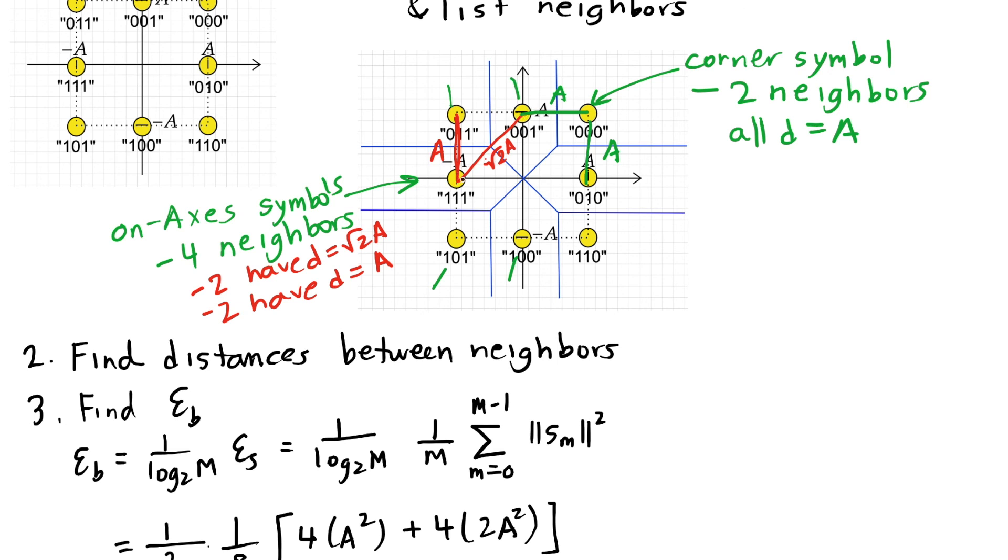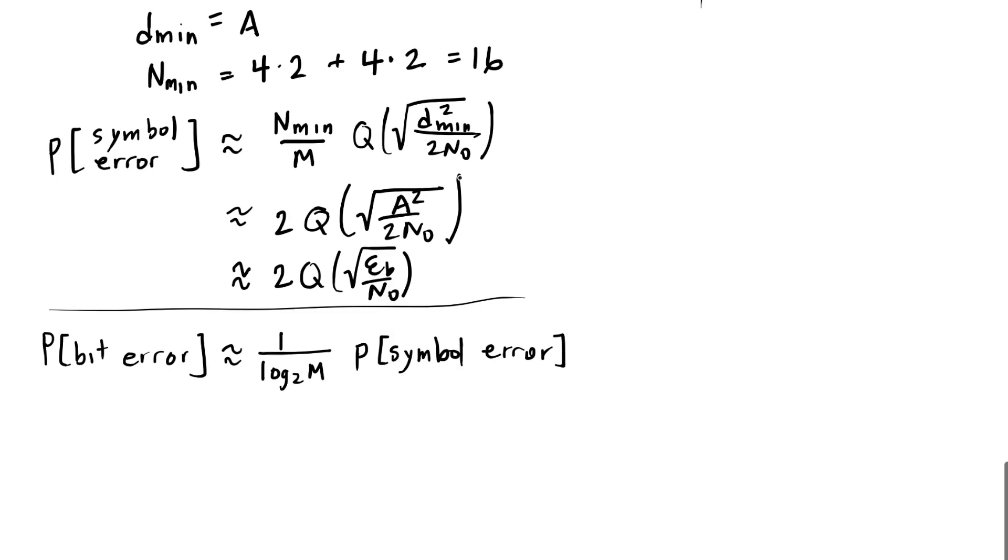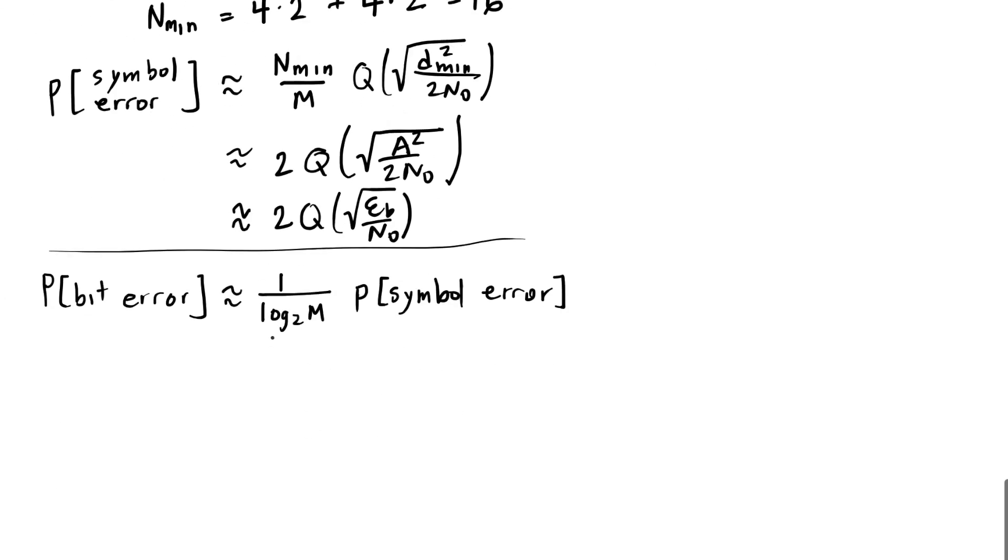These symbols, if I make an error from one axis to another axis, those are going to have two bit errors, but those are the less likely errors. So in this case, while gray coding is not a perfect assumption, it is always an approximation, and so this approximation holds.